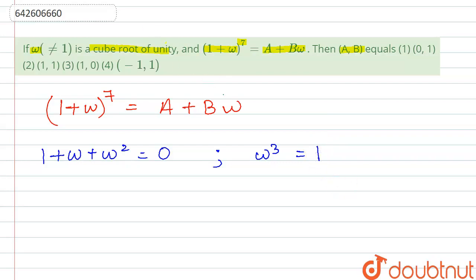So if we write this as 1 plus omega power 6 multiplied by 1 plus omega, this will remain same.